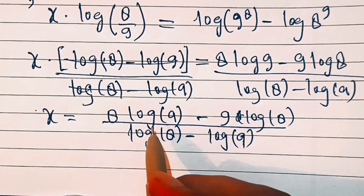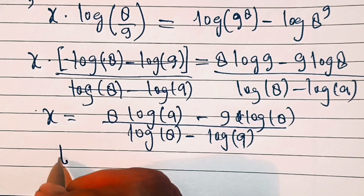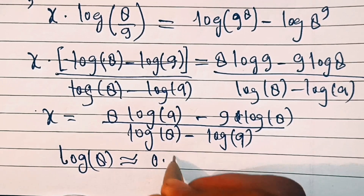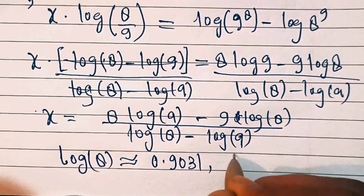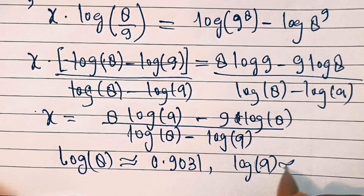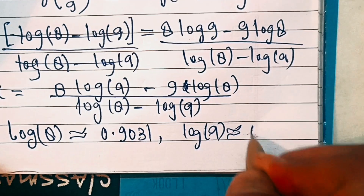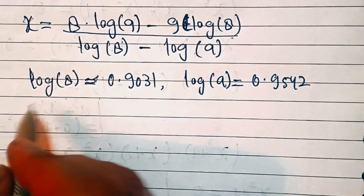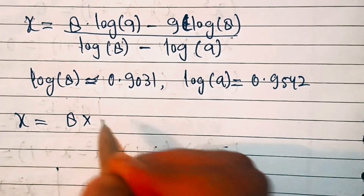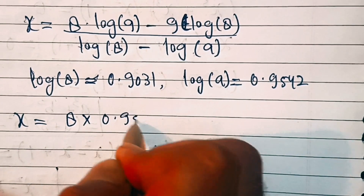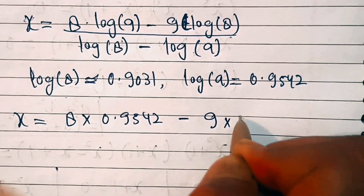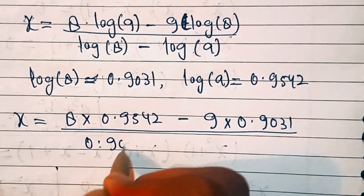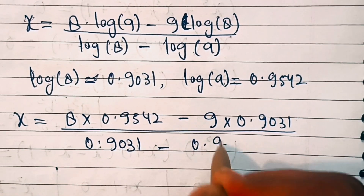Now we will calculate the value of log 8 and log 9 with the help of a calculator. We have log 8 approximately equal to 0.9031 and log 9 approximately equal to 0.9542. Let's put these values in. So we have x equal to 8 times 0.9542 minus 9 times 0.9031, divided by 0.9031 minus 0.9542.